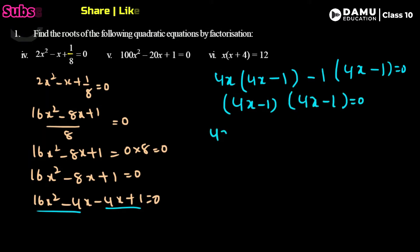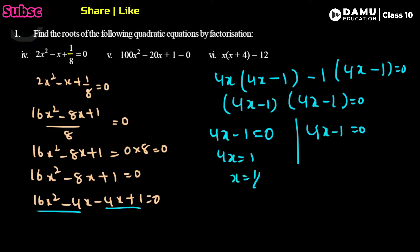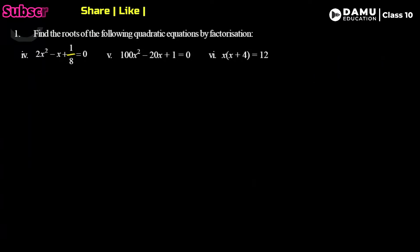This gives (4x - 1)(4x - 1) = 0. Either 4x - 1 = 0 or 4x - 1 = 0. These are two identical roots. So 4x = 1, giving x = 1/4 for both. Therefore x = 1/4 is the repeated root.